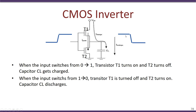Let us look in more detail at a CMOS inverter. It comprises two transistors T1 and T2, and a load capacitor C. When the input is at 0, transistor T1 is on and T2 is off, so the capacitor gets charged through VDD, giving an output of 1. When the input is set to 1, T2 turns on while T1 turns off, the capacitor discharges through T2, giving an output of 0. Thus, when there is a transition in input from 0 to 1, the output changes from 1 to 0 due to the charging and discharging of the capacitor.